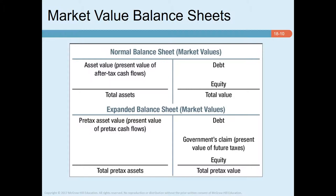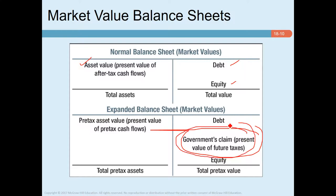However, MM's proposition considered only two slices. There can be a third slice: the government's claim — the present value of taxes. In an expanded balance sheet, government's claim constitutes part of the total value of assets. The firm should try to reduce this government's claim so that the firm retains a greater value for its equity and debt holders. This is the motivation for using the tax shield strategically.